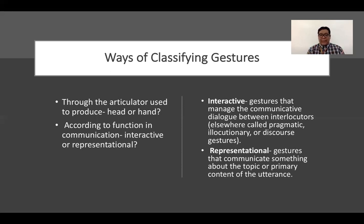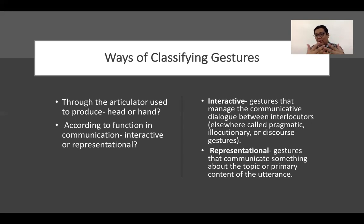Interactive gestures are those we use when we casually converse with someone, used unconsciously. On the other hand, representational gestures communicate something about the topic or primary content of the utterance — for example, when you say 'this' or 'this,' pointing to something, the hand gesture itself becomes the content of the discourse you are talking about. Interactive is what you use during interaction when you converse, and representational is what you use when you would like to refer to something that does not necessarily exist at the moment of conversation or the communicative event.